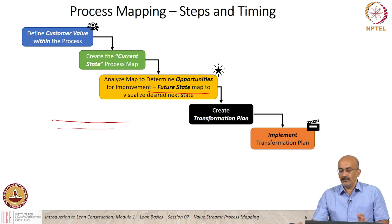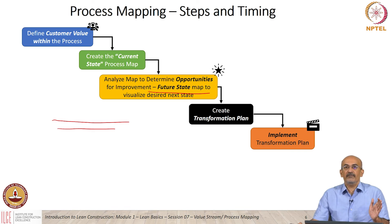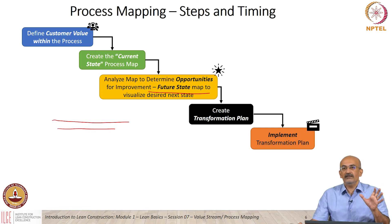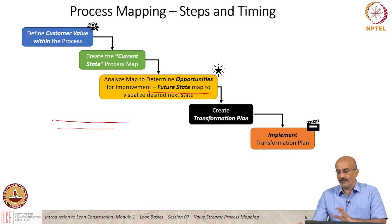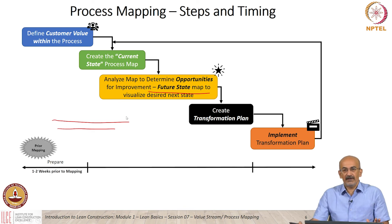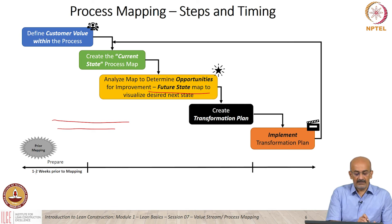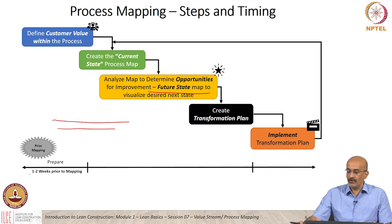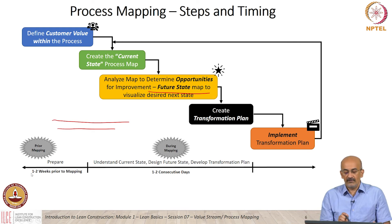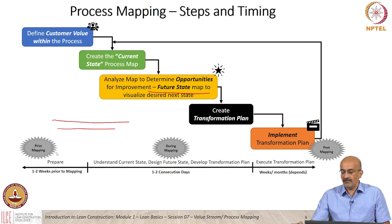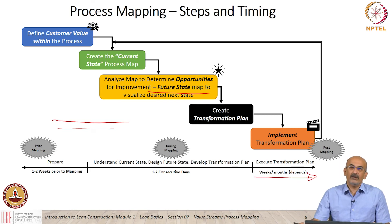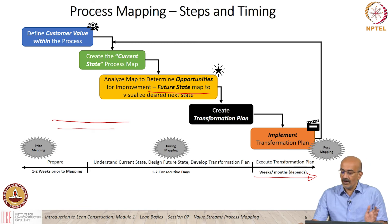We should then create the transformation plan and implement it. When we compare a process map plan to a value stream map plan, the process map scope is much smaller, so in general it is easier to do the transformation. From a timeline perspective, timelines are generally shorter — one to two weeks prior to mapping, one to two consecutive days to do the actual current state mapping, and then execution depends on the organization and how we need to transform the future plan into implementation.